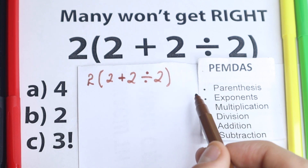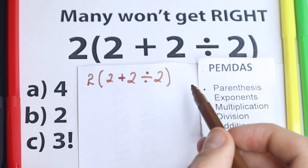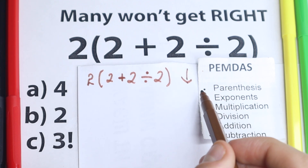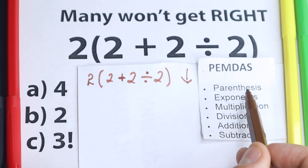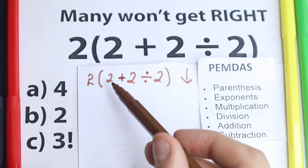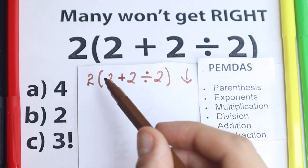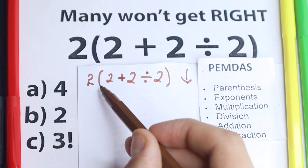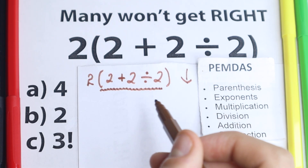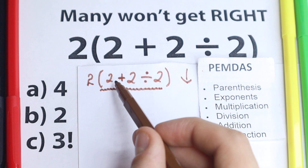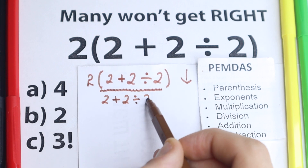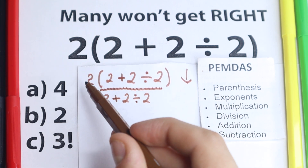Let's look at PEMDAS closely and create a correct order to solve this problem. PEMDAS works from top to bottom. The first step according to PEMDAS is parentheses. We need to scan where we have parentheses — and yes, we have parentheses right here. So the first step is to solve the expression inside these parentheses. Inside the parentheses we have 2 plus 2 divided by 2. We need to solve these parentheses first, then multiply the result by 2.